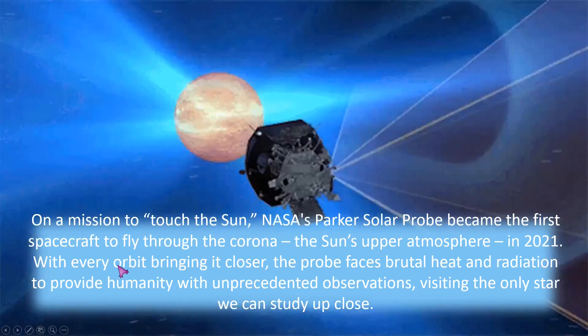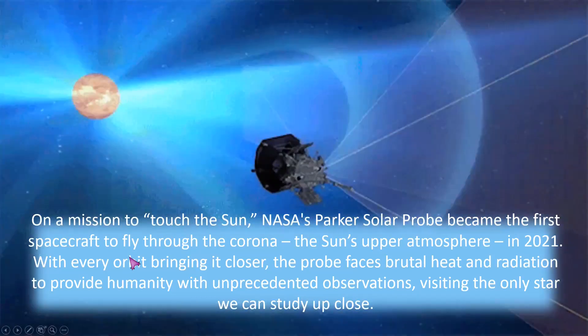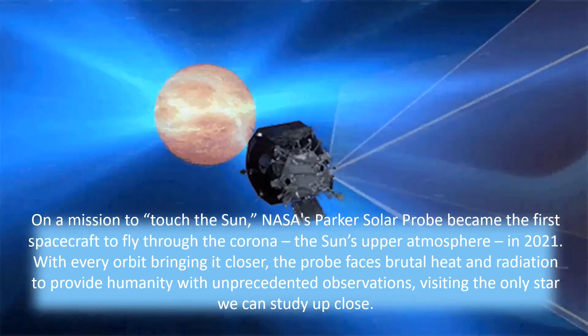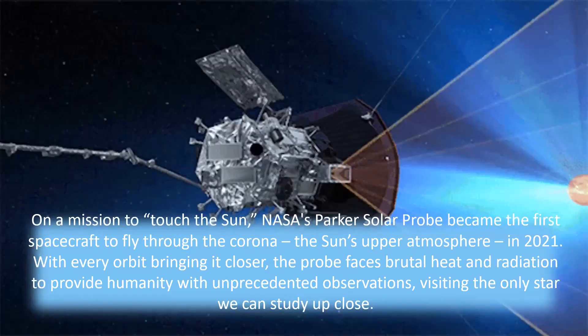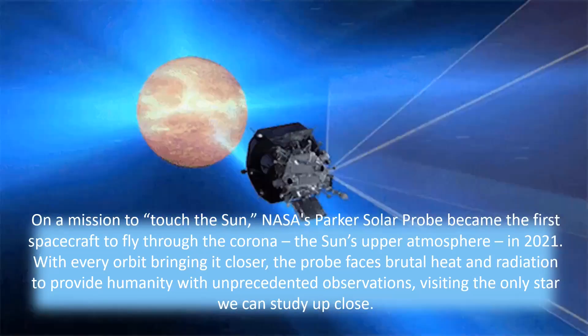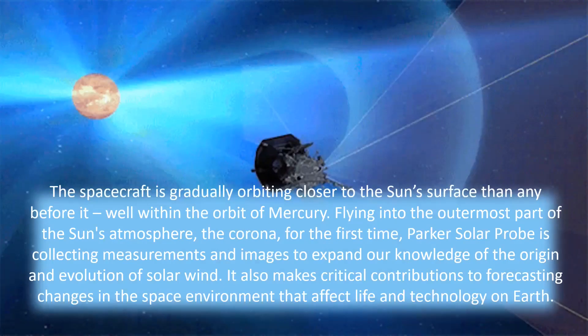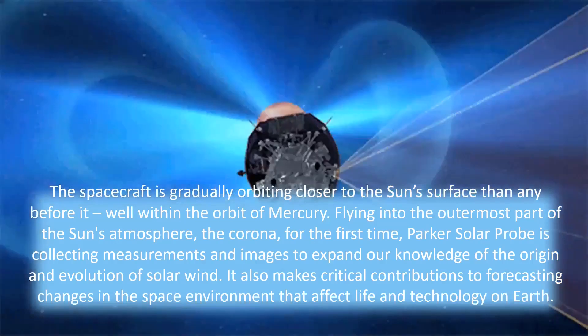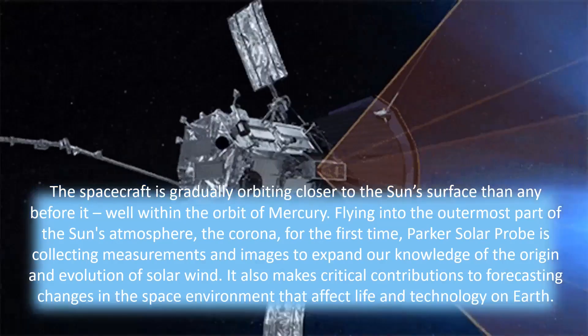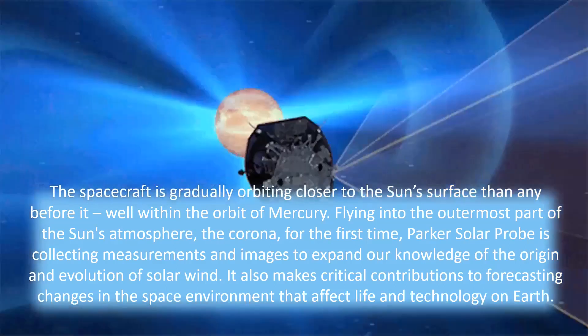What is this Parker Solar Probe? On a mission to touch the sun, NASA's Parker Solar Probe became the first spacecraft to fly through the corona, the sun's upper atmosphere, in 2021. The spacecraft is gradually orbiting closer to the sun's surface than any before it, well within the orbit of Mercury, flying into the outermost part of the sun's atmosphere for the first time. Parker Solar Probe is collecting measurements and images to expand our knowledge of the origin and evolution of solar wind. It also makes critical contributions to forecasting changes in the space environment that affect life and technology on Earth.